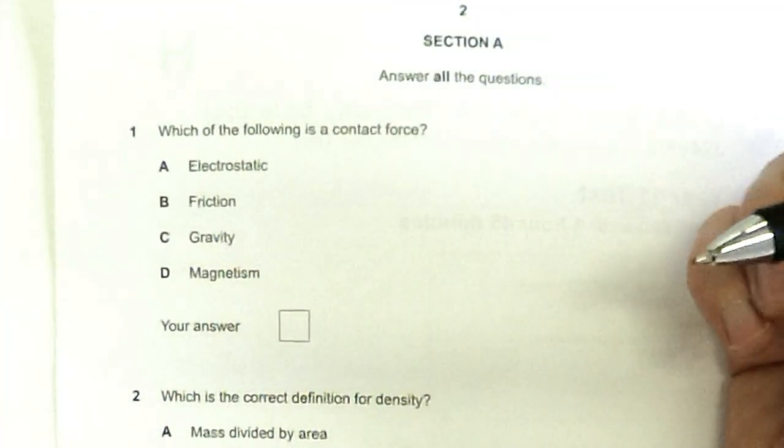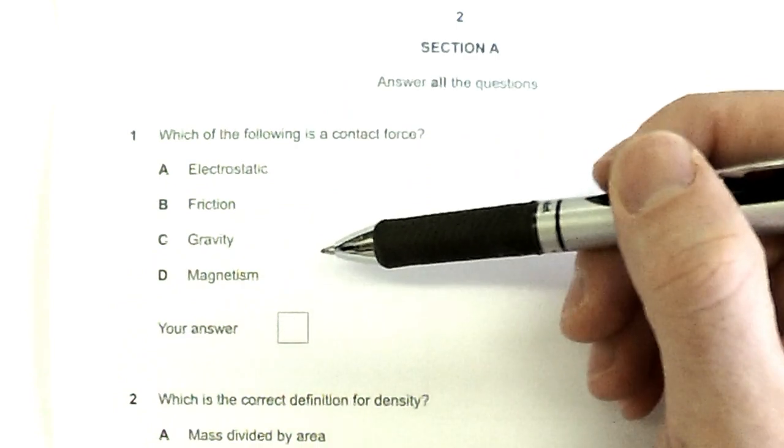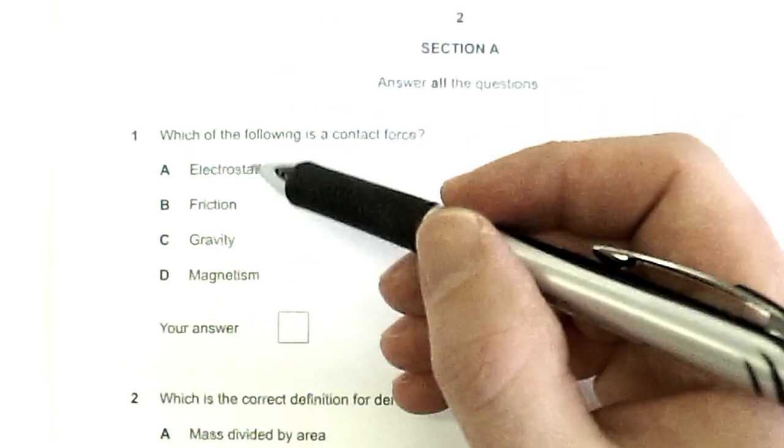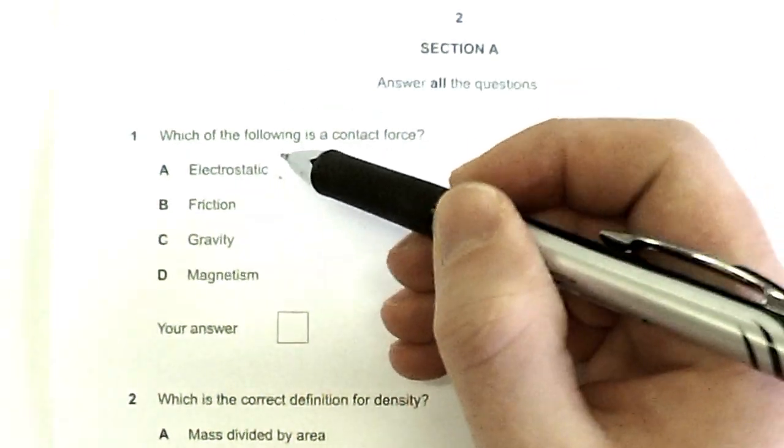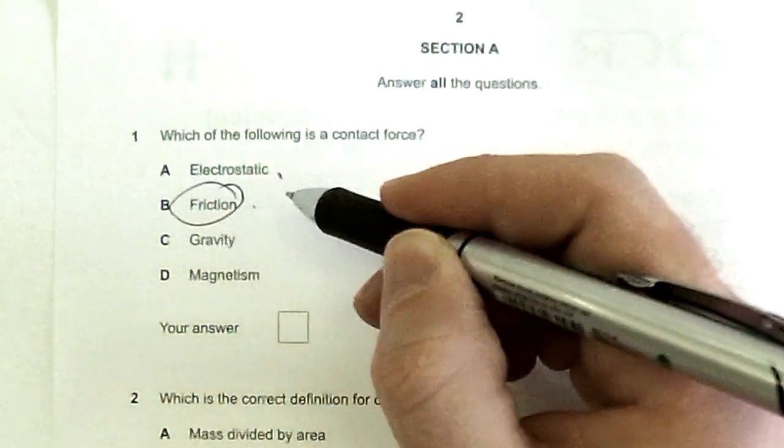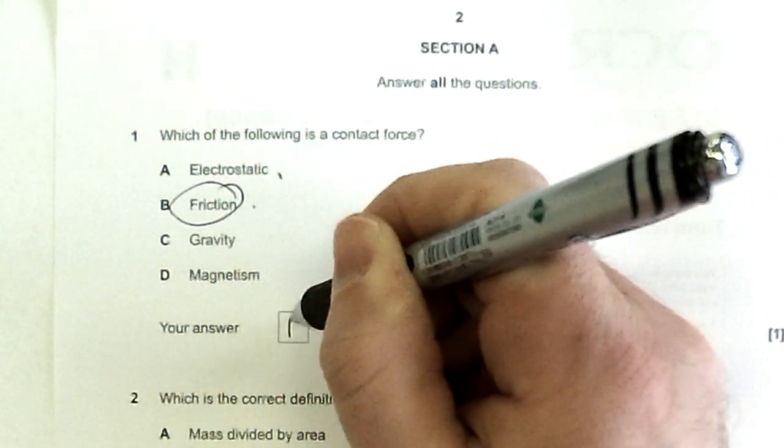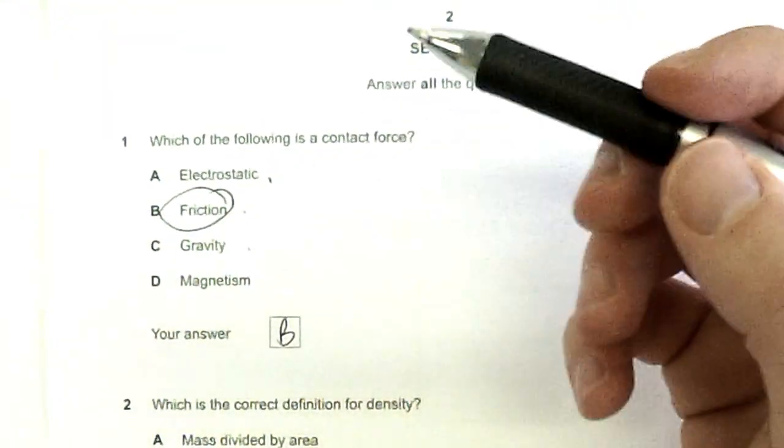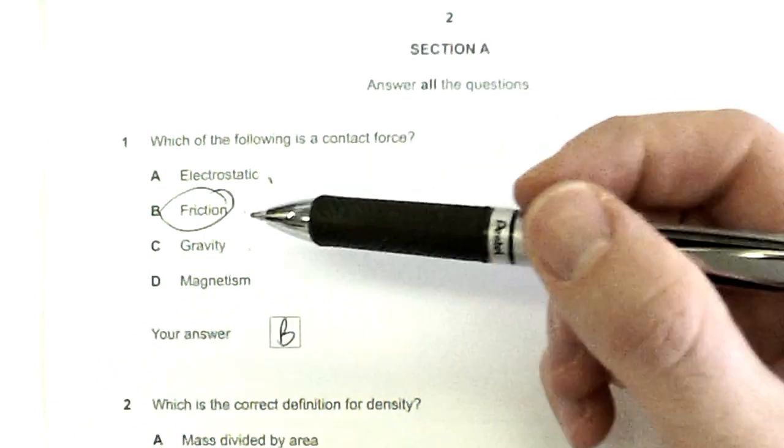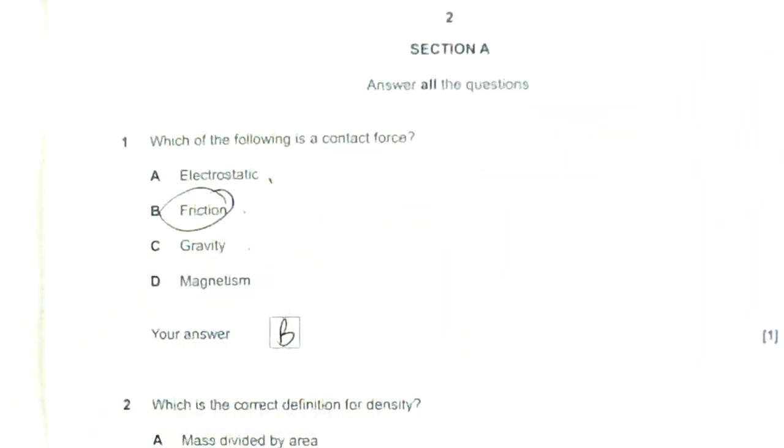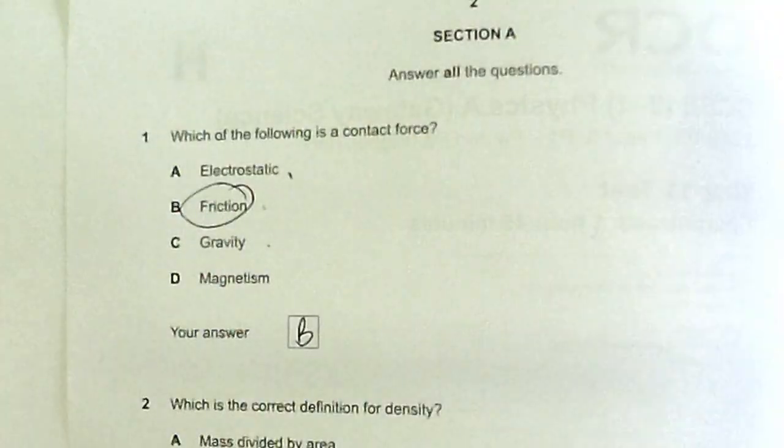Which of the following is a contact force? Whenever you tackle multiple choice, always try and answer the question before looking at the answers. This is two charged particles acting at a distance. This is when two particles are in contact, so I'm thinking my answer is B. Gravity is two masses being attracted to each other over a distance, and magnetism can be over a distance. So the only one that's contact is friction. Friction is two surfaces being in contact.